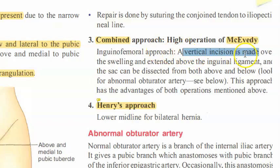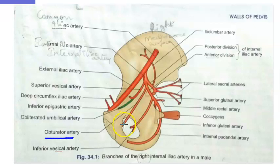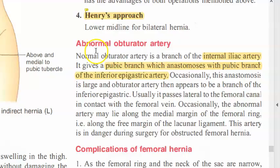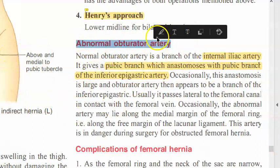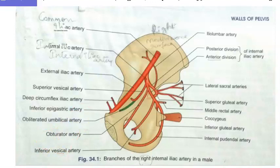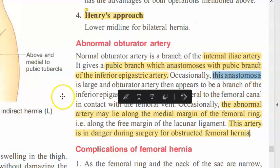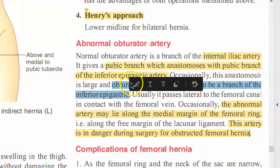An important surgical consideration is the obturator artery, which is a branch of the internal iliac artery. Surgeons must be careful to look for an abnormal obturator artery during the procedure. This artery anastomoses with the pubic branch of the inferior epigastric artery, which arises from the external iliac artery.